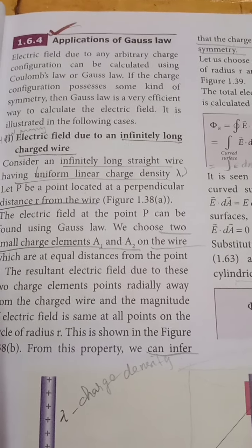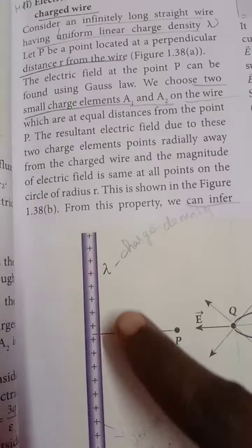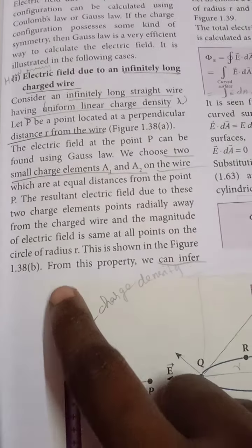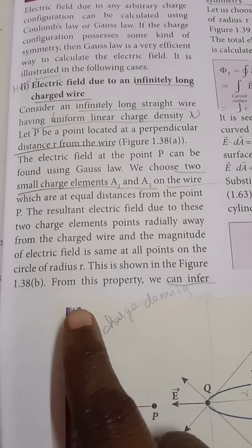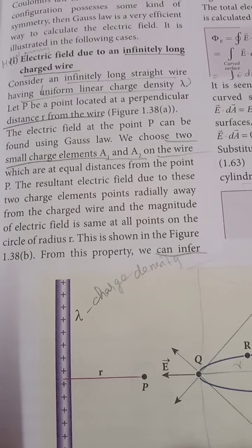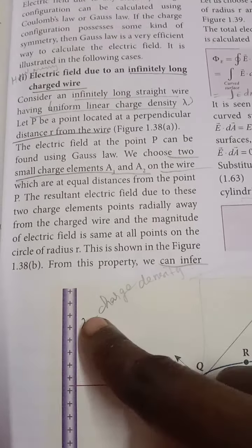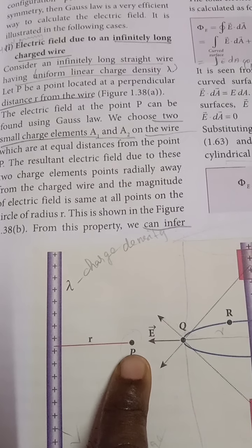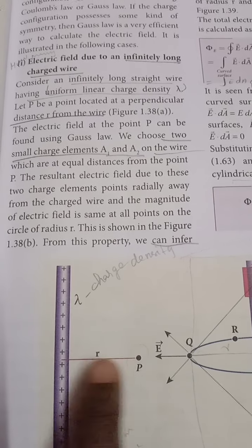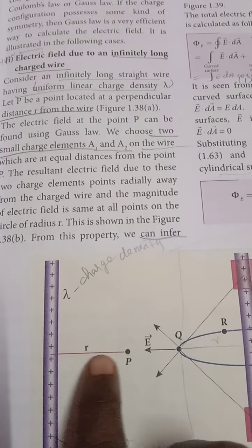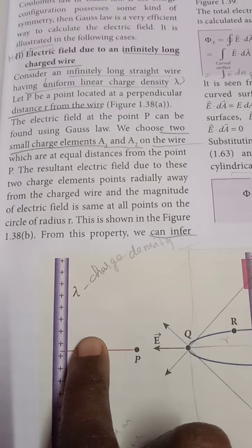Electric field due to an infinitely long charged wire. Consider an infinitely long straight wire having a uniform linear charge density. Here the wire has uniformly distributed positive charges. This uniform charge density we consider as lambda. We take a point P at a perpendicular distance from the wire, and this distance we are considering as small r.